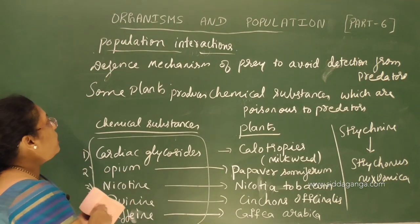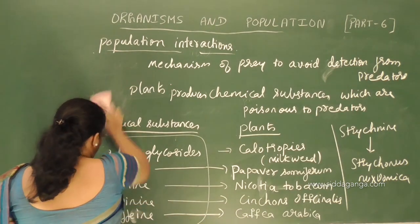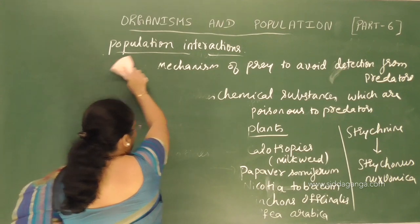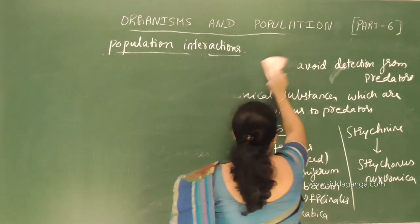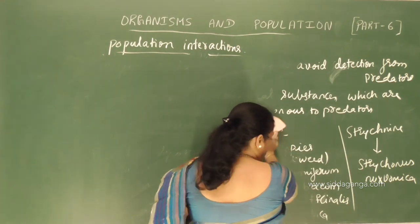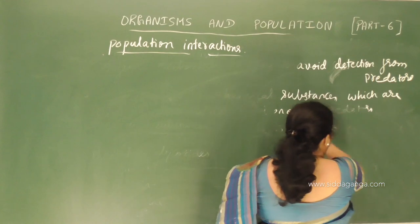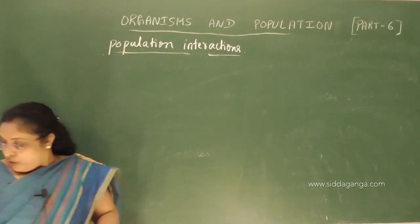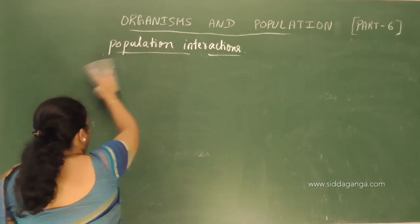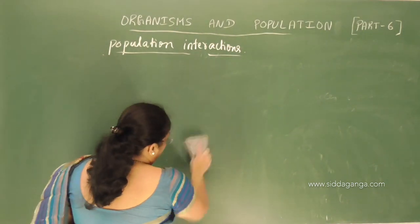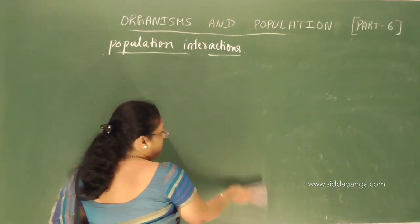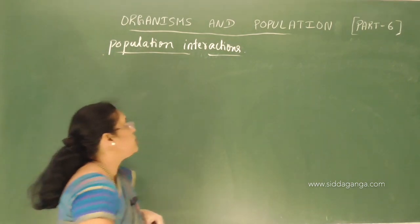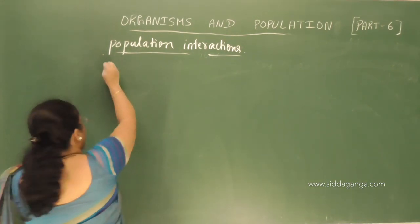Then we will move with another type of population interaction — amensalism. Predators help to check prey population, act as conduits of energy transferring between trophic levels, and help to maintain species diversity in a community. Predators play an important role in the ecosystem.